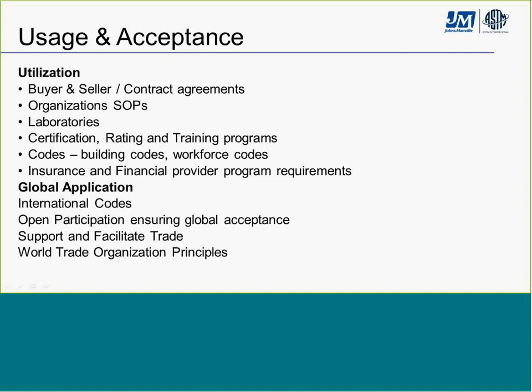In summary, ASTM standards are used by buyers and sellers in contract agreements, in organizational standard operating procedures, and by employees. Education, rating, and training programs are based on ASTM standards. Standards are built into codes and financial providers' program requirements. There are also global applications for the use of ASTM standards, with ASTM standards referenced in international codes and used to support and facilitate trade.